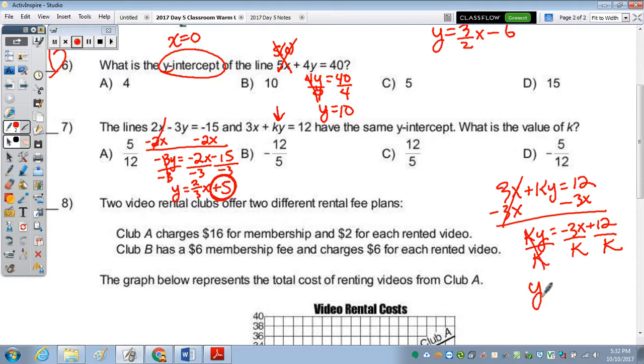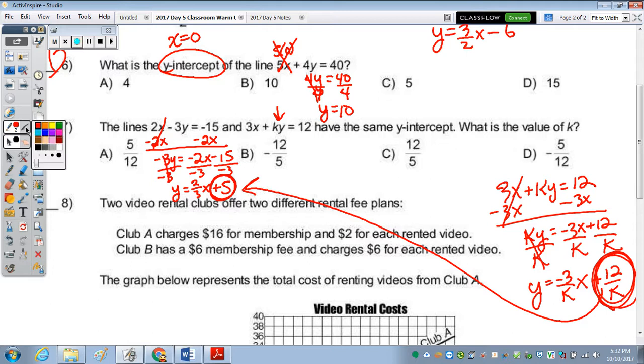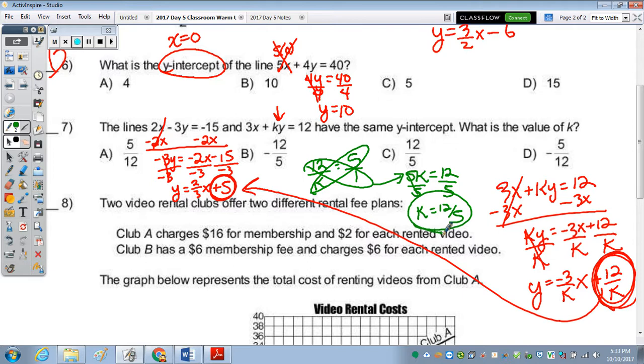Divide by k. And y equals negative 3 over kx plus 12 over k. Now in this question, this needs to equal this. So this one is tricky. So if 12 over k is supposed to equal 5, we'll put this over 1 cross multiply. We end up with k times 5, 5k. 1 times 12 is 12. Divide by 5. And k is 12 fifths.